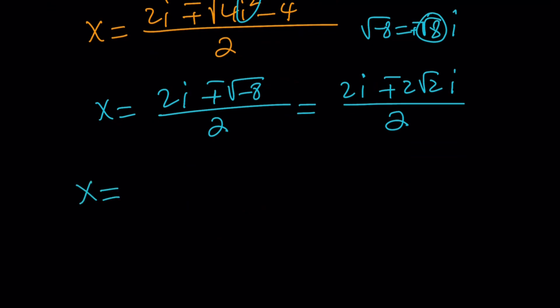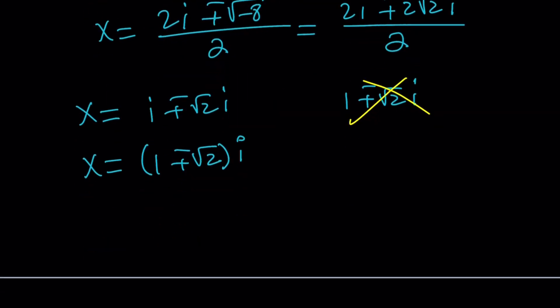you get x as i plus minus root 2i. But there's a much better way to write it because both of these terms are imaginary. We can just add them and write this as 1 plus minus root 2, all multiplied by i. Don't get me wrong. This is not the same as 1 plus minus root 2 times i, which is a complex number in the form a plus bi. But in this case, a is 0. We only have a pure imaginary number. It's just a multiple of i, in other words. So, this is not the same thing. Great. So, we got the x value, and what were we looking for? The x values.